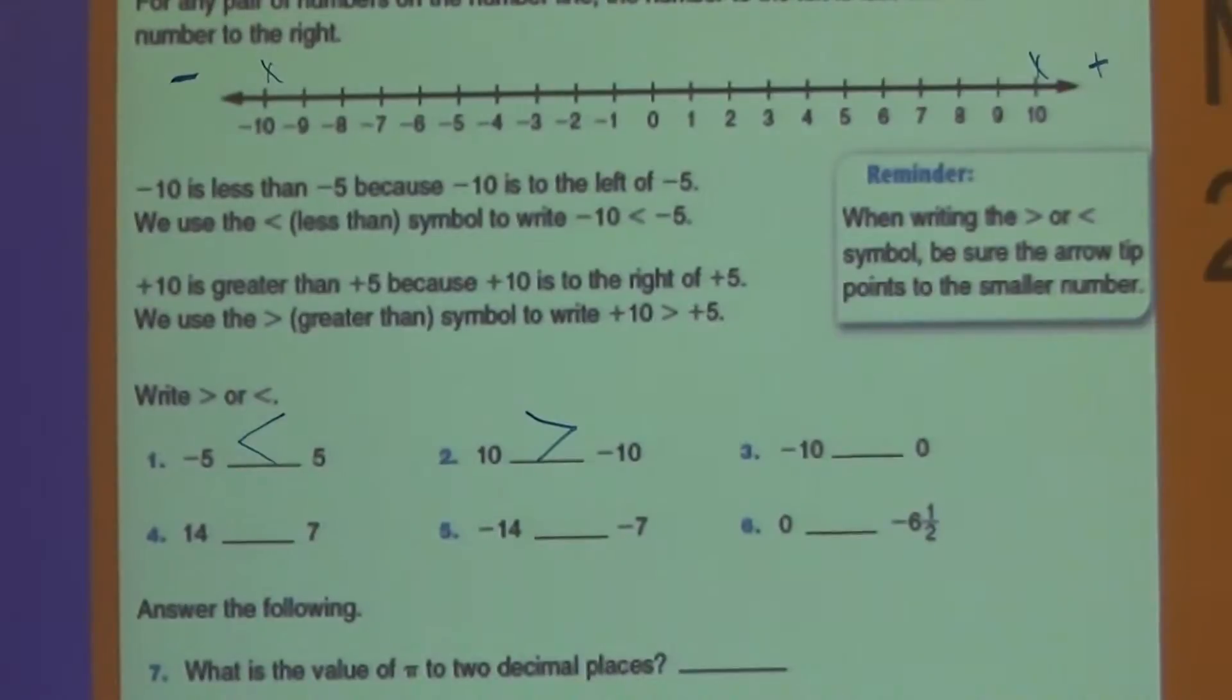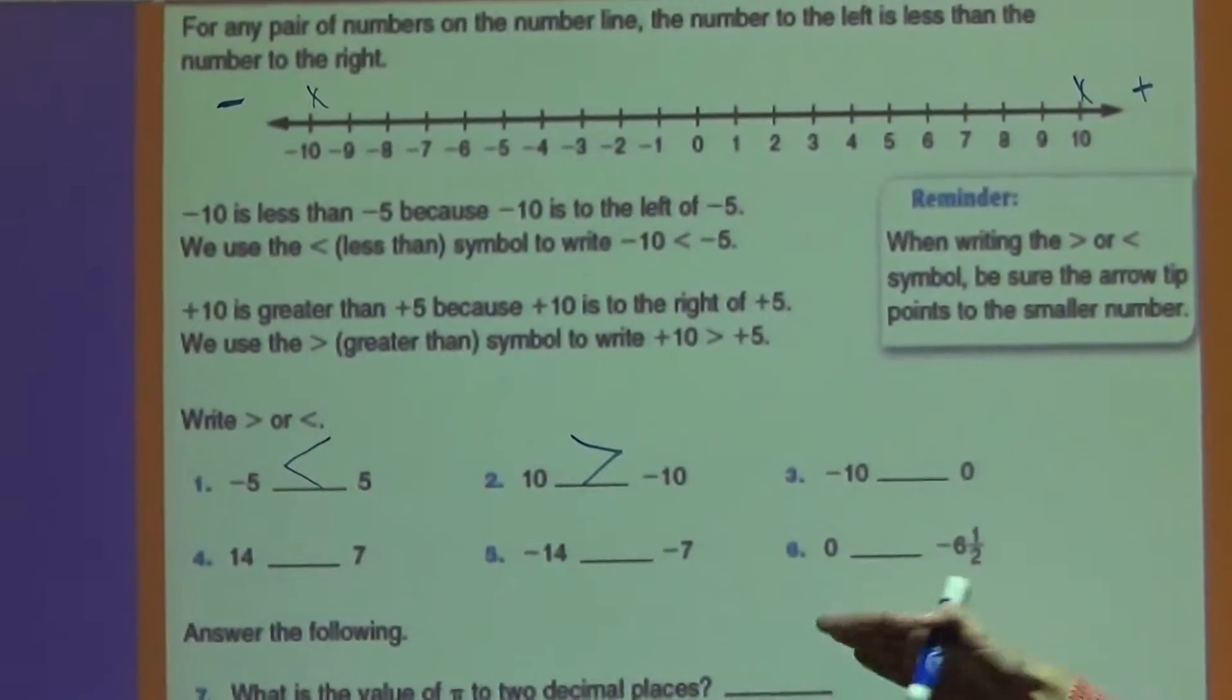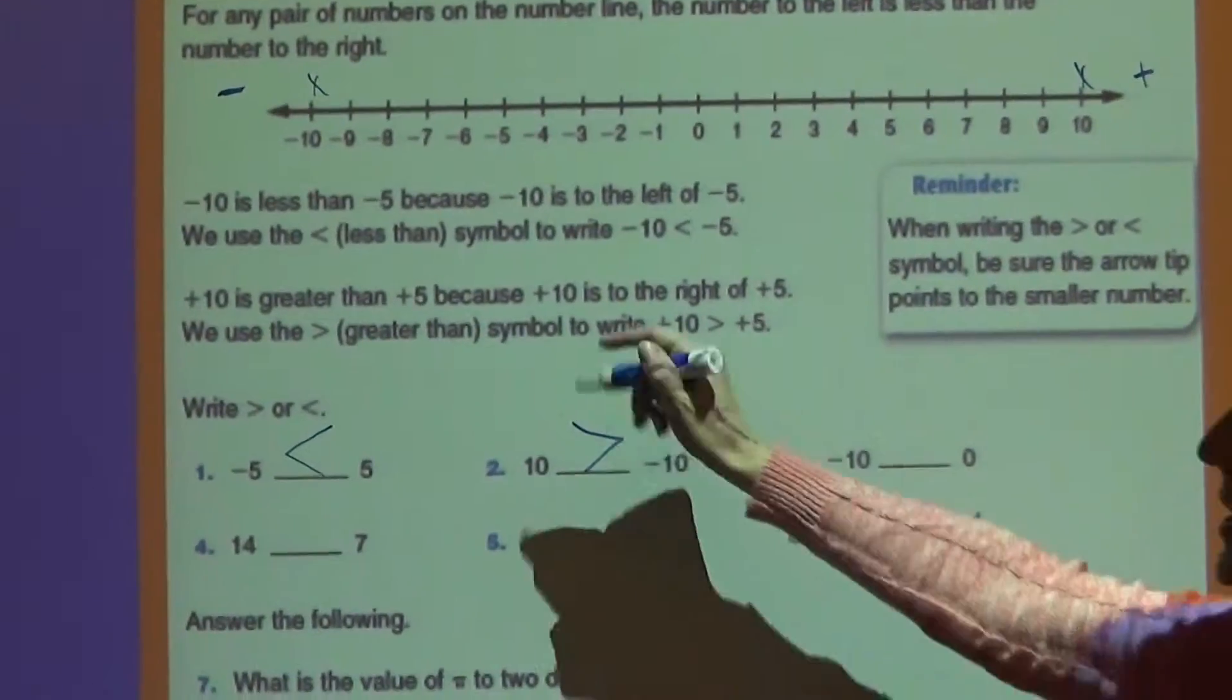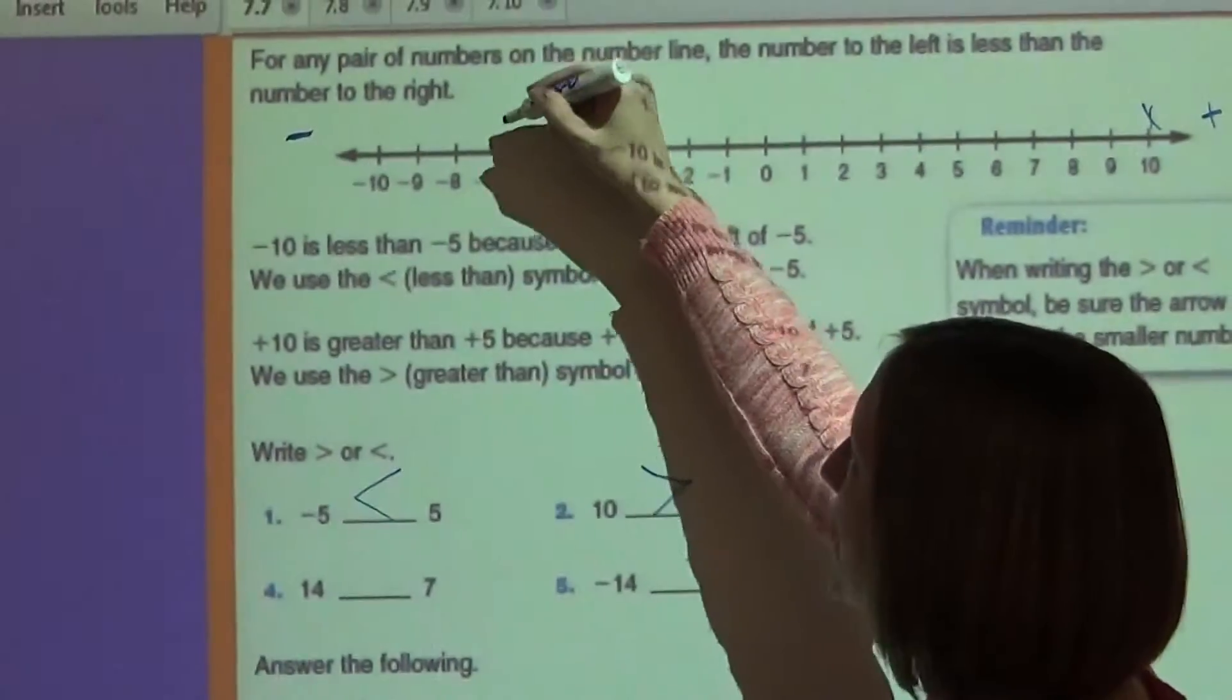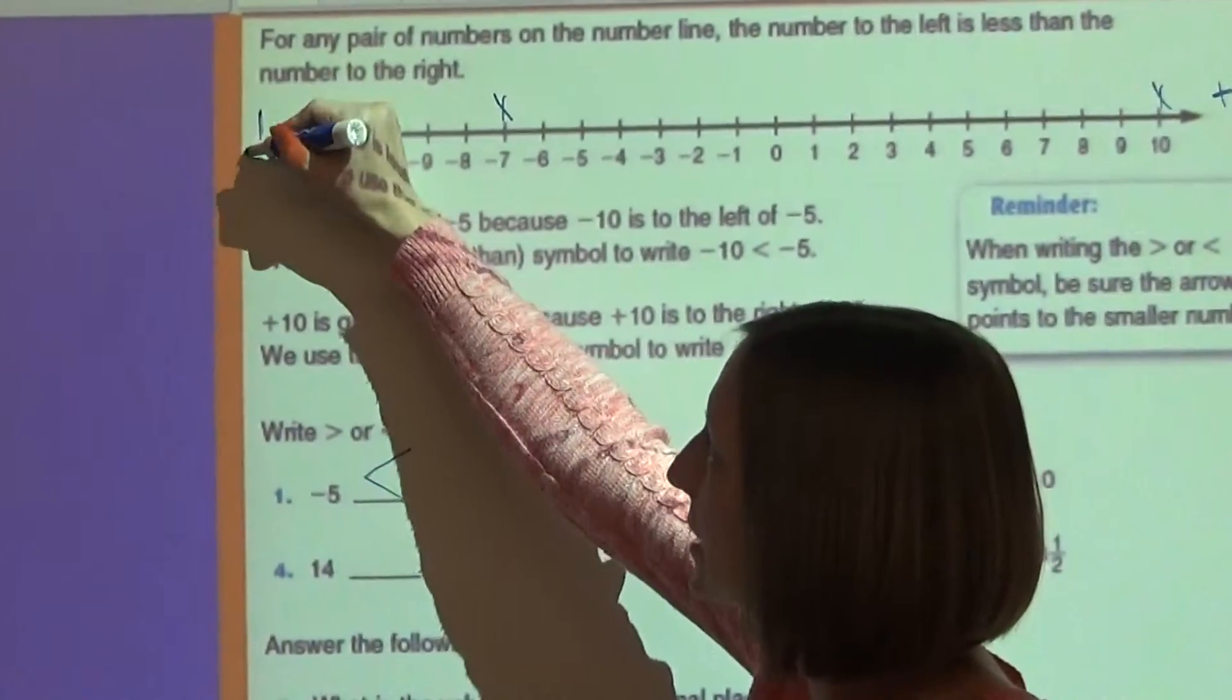Some of these, like negative 14 and negative 7. We're used to thinking that 14 is a bigger number than 7. But when we're on the number line, negative 7 is here. And I would have to keep going over probably about here to get to negative 14.